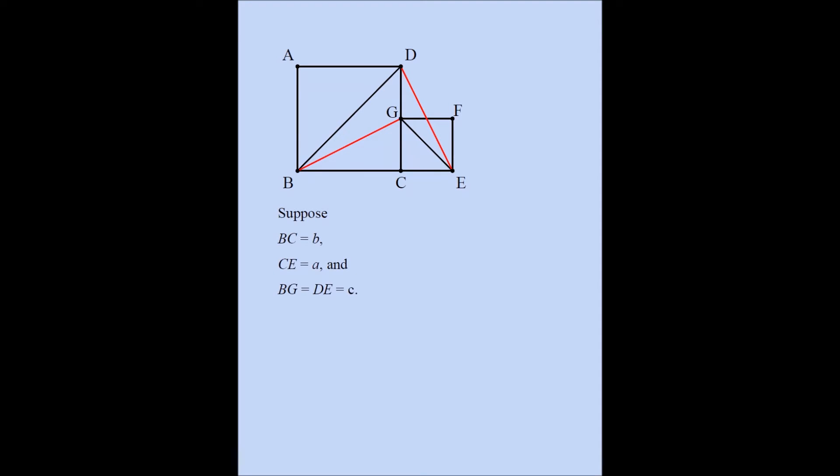Let's say BC is b and CE is a, and BG is equal to DE, which equals c. So the hypotenuses BG and DE are each equal to c, the length of the larger square is b, and the length of the smaller square is a. We need to show that a² + b² = c². That's our goal.